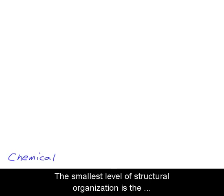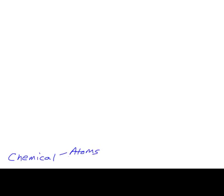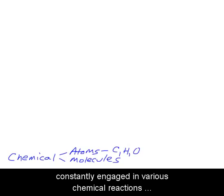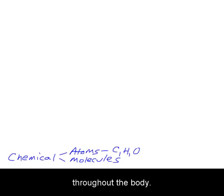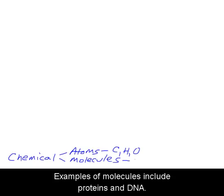The smallest level of structural organization is the chemical level, which is composed of atoms and molecules. Atoms, such as carbon, hydrogen, and oxygen, are constantly engaged in various chemical reactions throughout the body. Molecules are two or more atoms bonded together. Examples of molecules include proteins and DNA.